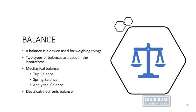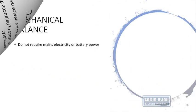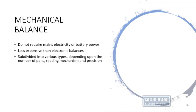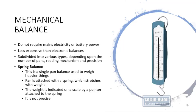One type is called the mechanical balance and the second is called the electrical or electronic balance. Mechanical balances have three major types: the trip balance, the spring balance, and the analytical balance. A mechanical balance does not require any electricity or battery power and is less expensive compared to electronic balances. Based on different reading mechanisms, precision, and pans, mechanical balances are subdivided into different types.